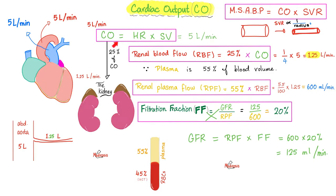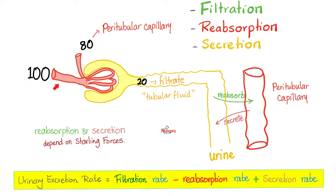We crunched some numbers: the cardiac output is about 5 liters per minute, renal blood flow is about a fourth of that, or 1.25 liters per minute. The plasma is 55% of that, or about 600 ml per minute. The glomerular filtration rate is about 20% of that — the 20% is called the filtration fraction — and so the GFR should be about 125 ml per minute. The fluid that leaves the afferent arteriole and enters into the nephron is called filtered fluid. If you leave the nephron and go back to the blood, it's called reabsorption. But if you leave the blood and go to the urine, it's called secretion.